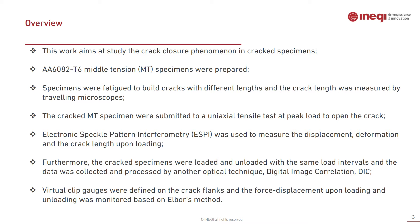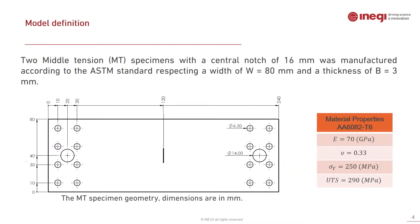Virtual clip gauges were defined on the crack flanks, and the force-displacement during opening, loading, and unloading was monitored based on Elber's method. Regarding the model definition, two MT specimens with a central notch of 60 millimetres were manufactured according to the ASTM standard, with a width of 80 millimetres and a thickness of 3 millimetres. In the image it is possible to see the general view of the specimen.